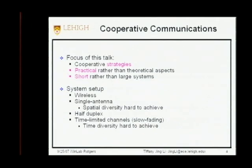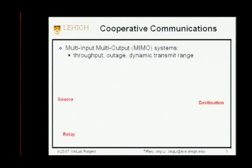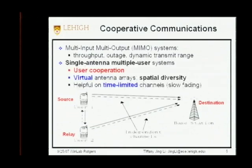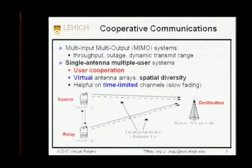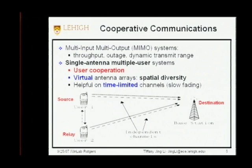Here are some of the assumptions: wireless, single antenna, meaning spatial diversity is hard to get; half duplex, which is the practical assumption; and time-limited channels, meaning slow fading or block fading, so time diversity is hard to achieve. Because of these reasons, people talk about spatial diversity. We know about MIMO technologies, which are great for improving throughput, reducing outage, and increasing dynamic transmit range. However, for single-antenna systems, we can't use MIMO. What people propose is to let users collaborate and construct a so-called virtual MIMO — building virtual antenna arrays to get spatial diversity from different users. This is particularly helpful on time-limited channels.